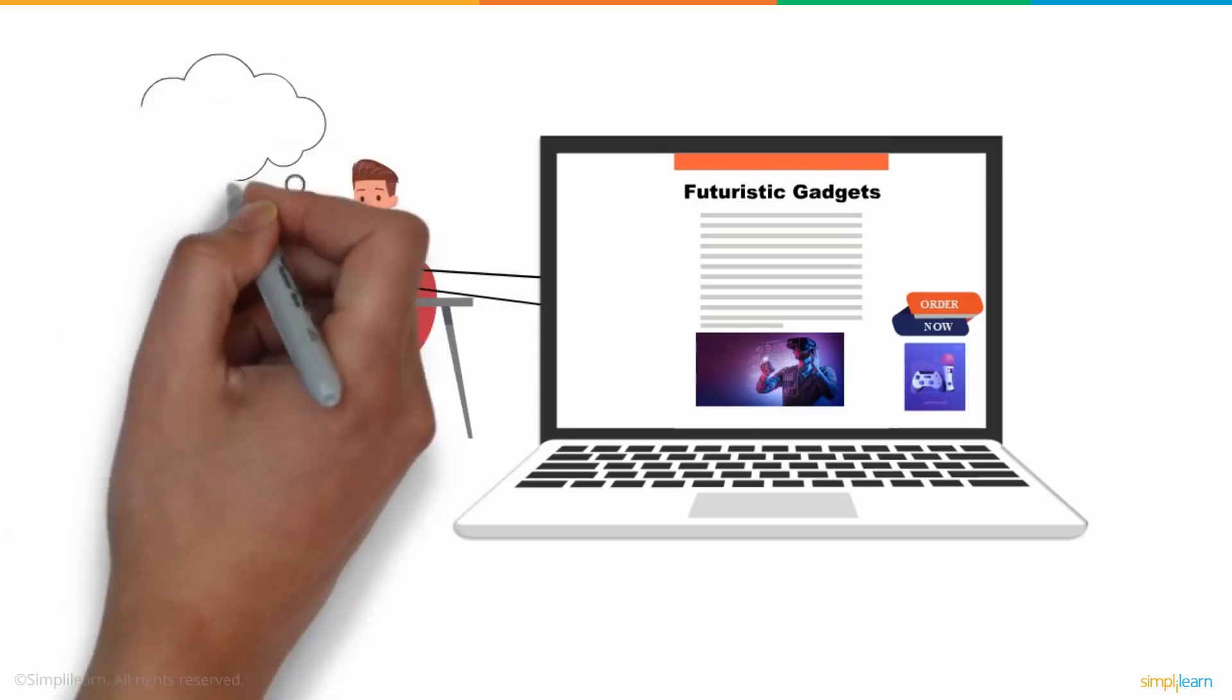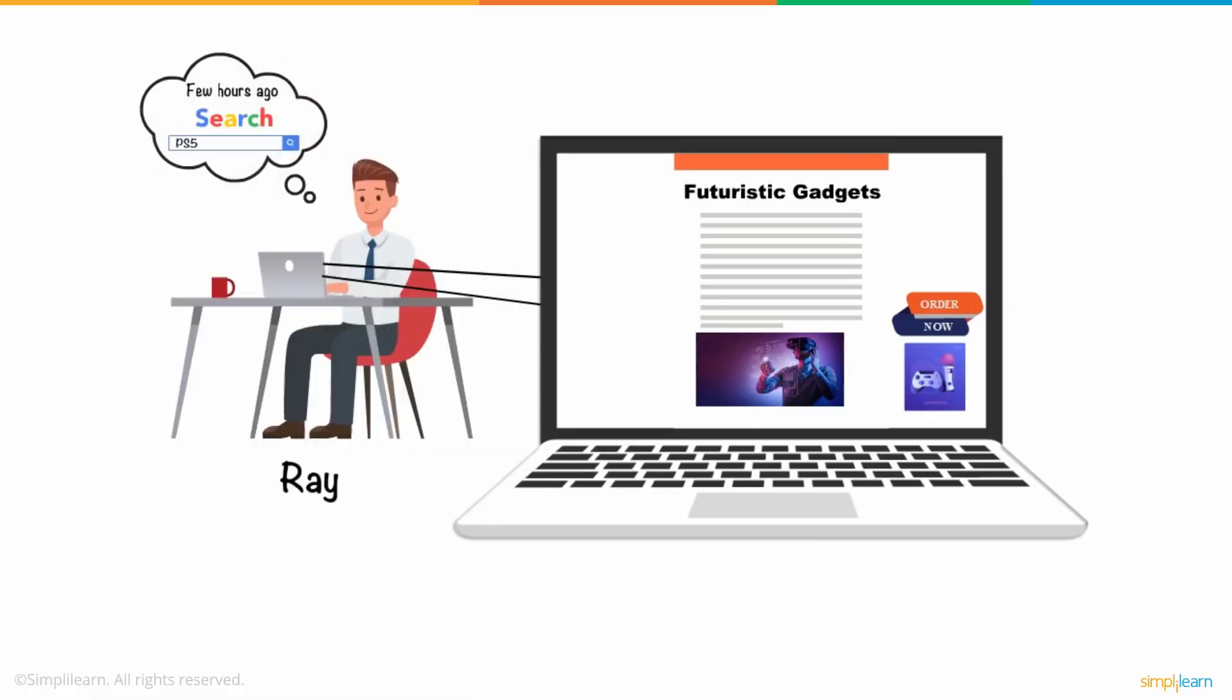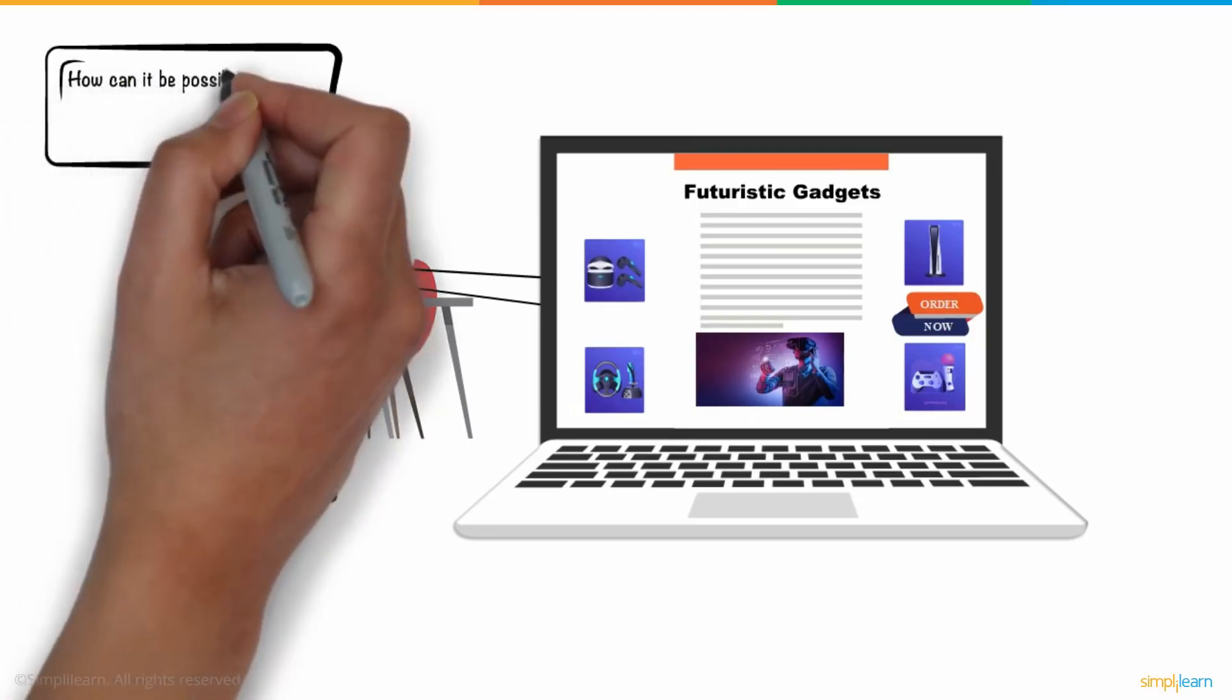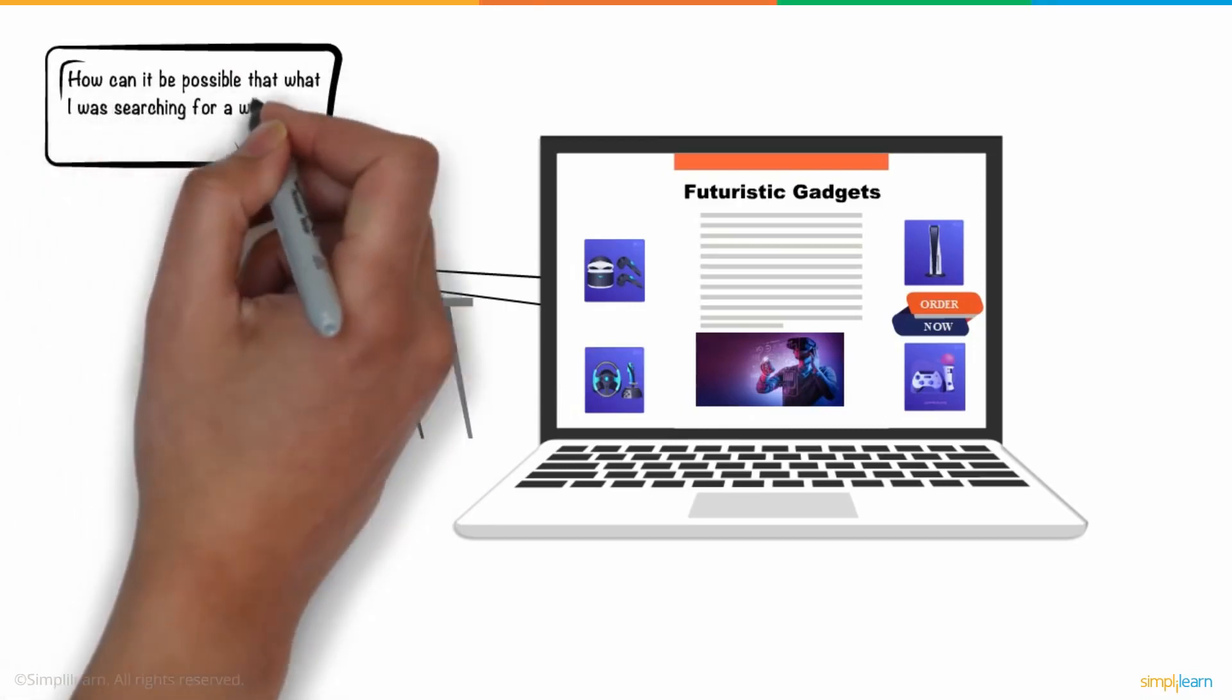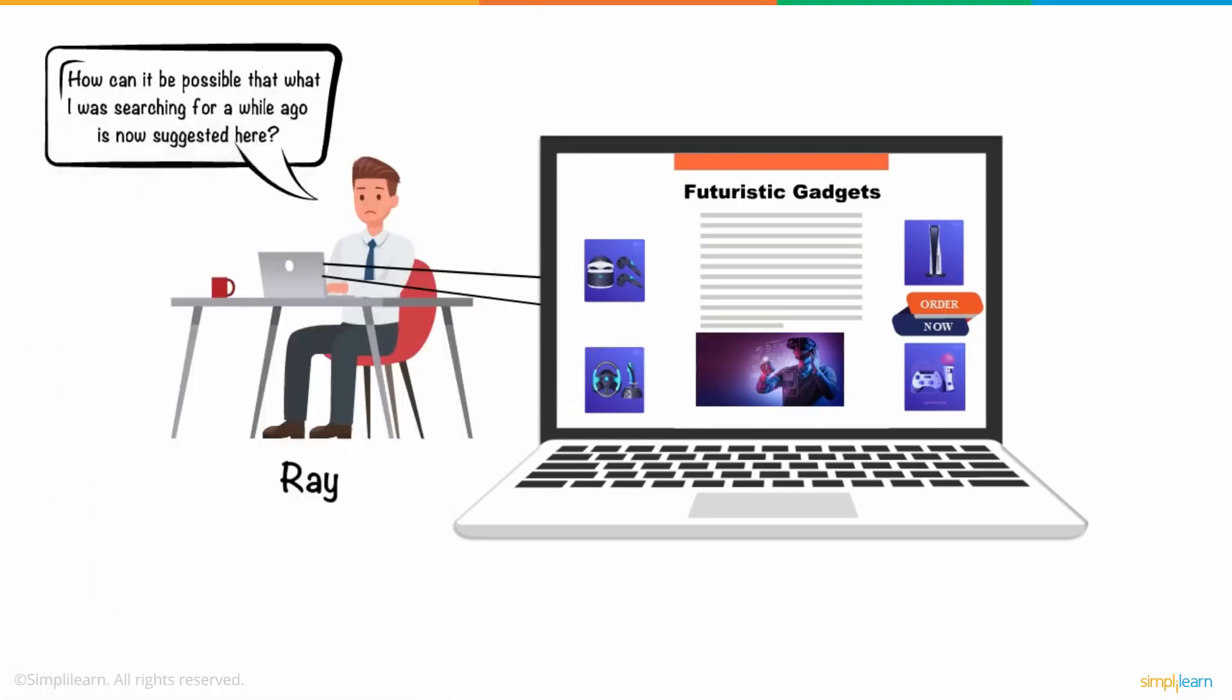He found it a little strange as he recalled searching for that just a few hours ago. Later that day, he came across suggestive ads popping up related to buying future-leading gadgets. And that is when he freaked out, thinking how can it be possible that what he was searching for just a few hours or days ago on the internet is now suggesting ads similar to them?